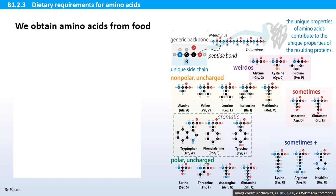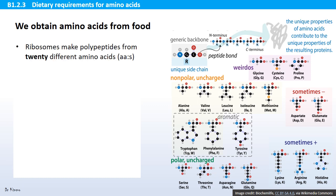Polypeptides are the main component of proteins. We obtain amino acids from food, and our ribosomes make polypeptides from 20 different amino acids. Each amino acid differs by its R group, as illustrated on the right where all 20 amino acids can be found. You can see that each has the same backbone with an amine group and a carboxyl group, and then their own type of side chain or R group.